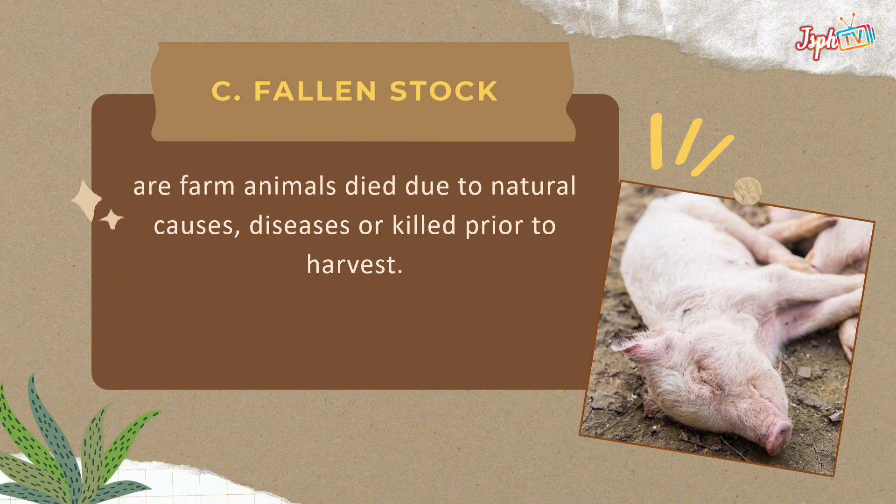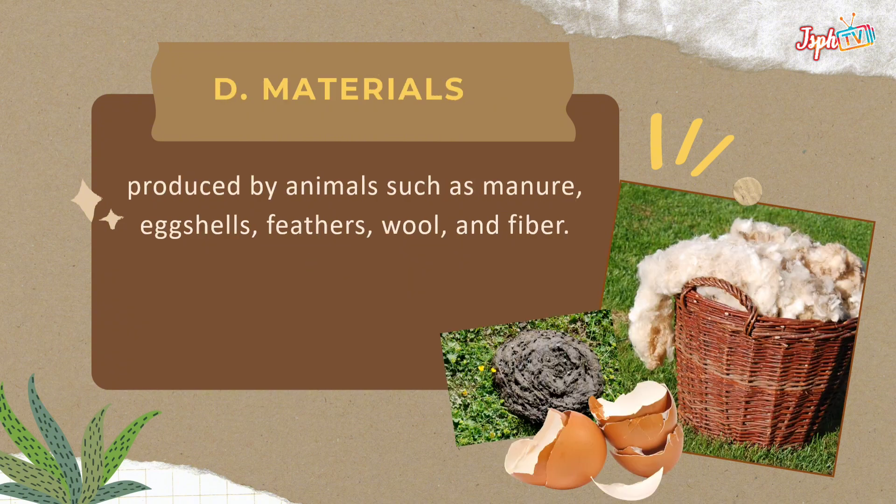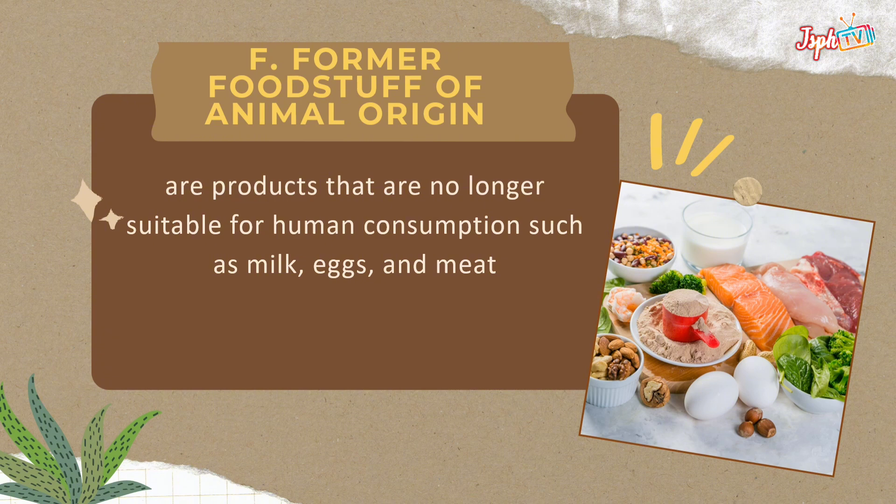Dead stock refers to farm animals that die due to natural causes or diseases, or are killed prior to harvest. Materials produced by animals include manure, egg shells, feathers, wool, and fiber.